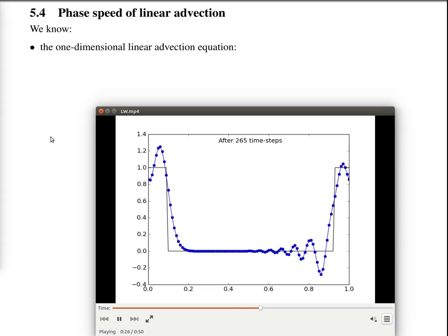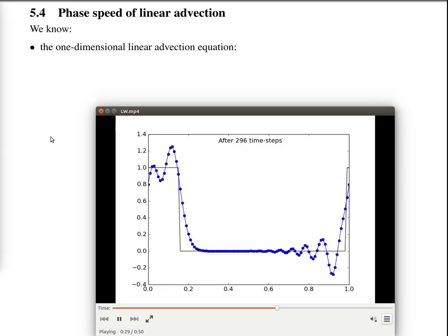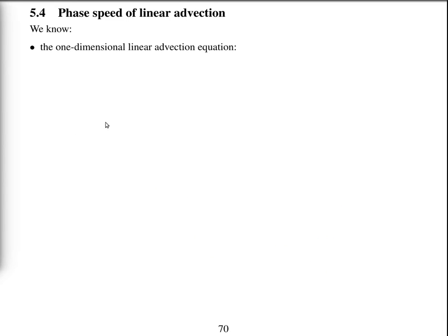First, we will consider the phase speed of the continuous linear advection equation. So we know the one-dimensional linear advection equation: rate of change of phi with time plus the velocity times the rate of change of phi with space is equal to zero.